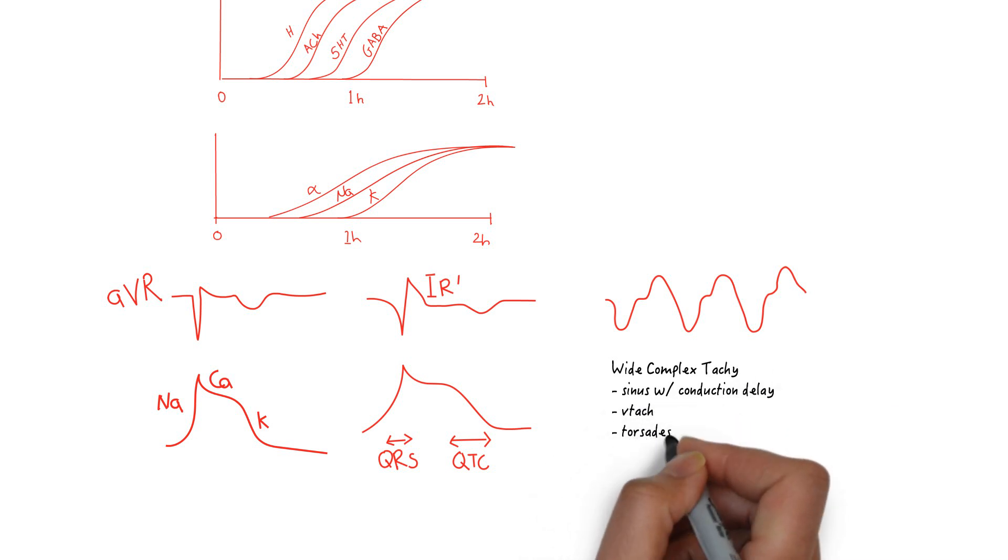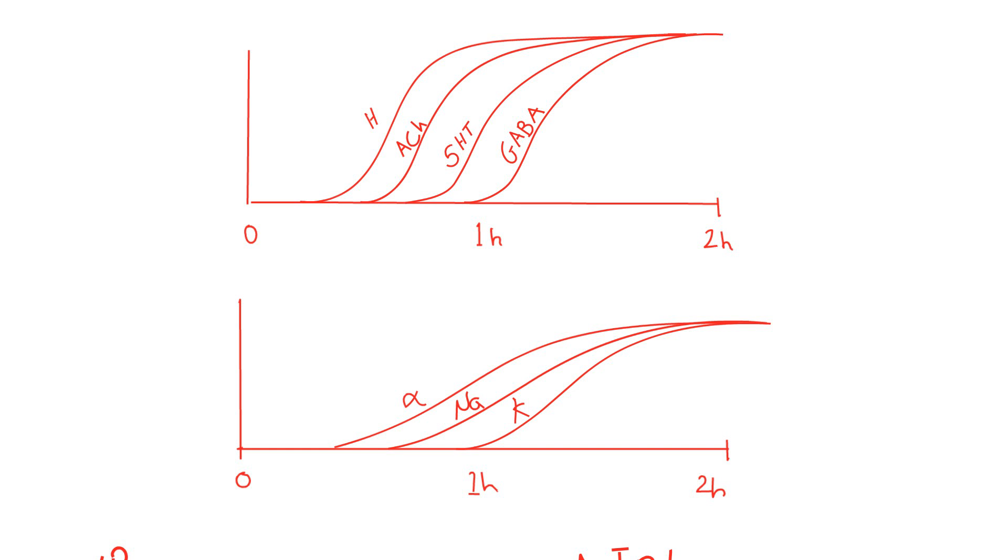Lastly, torsades is possible given the prolonged QTC, but much more unlikely given the tachycardia. The patient's clinical status can degenerate into cardiac arrest, which will unlikely respond to ACLS recommendations of cardioversion or amiodarone.